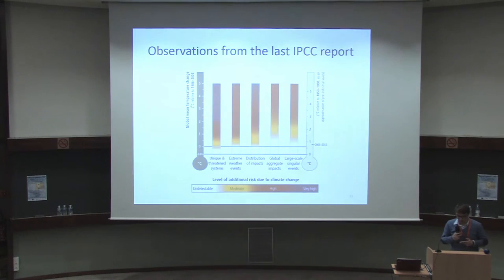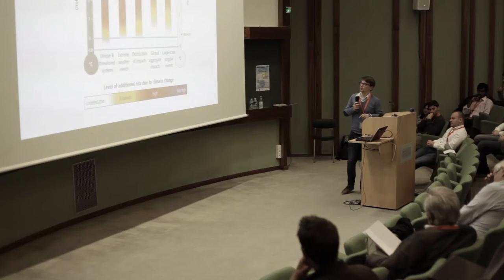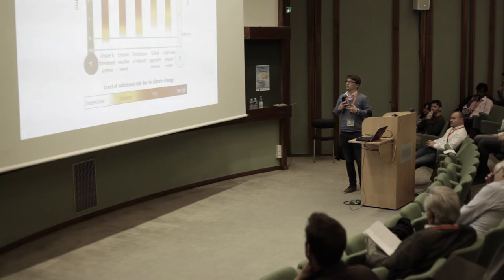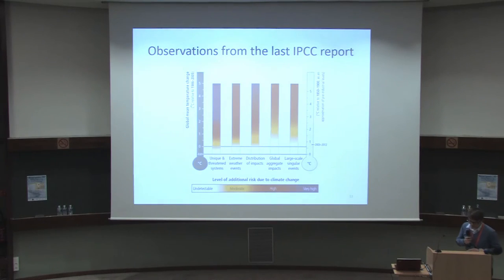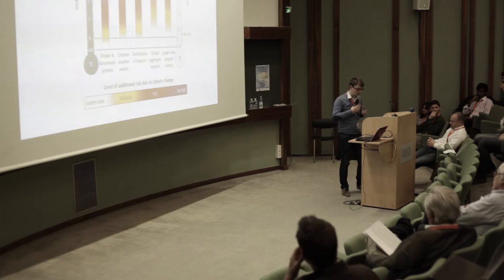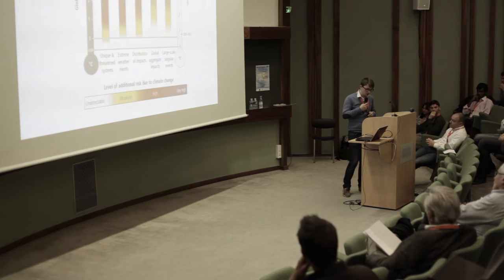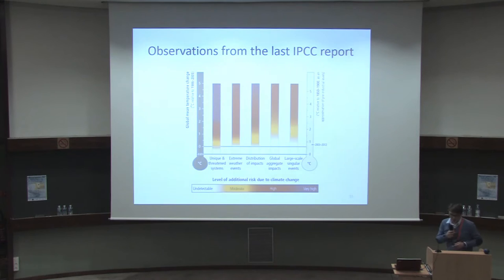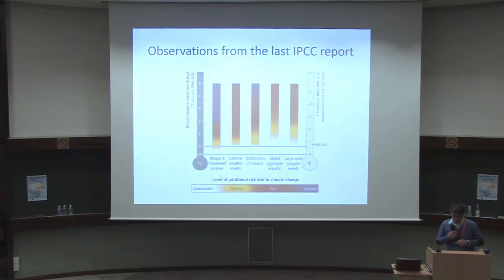At around three degrees, we know it will involve biodiversity losses or ecosystem goods and services losses. Above three degrees, we are not really able to estimate the damage. About the last Reason for Concern — large-scale singular events — we know we are speaking about systems at risk of irreversible changes. Between zero and one degrees the risks are moderate, but there are already systems undergoing irreversible shifts.